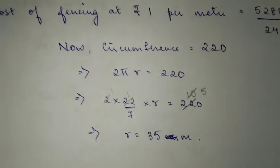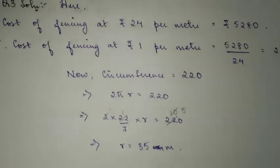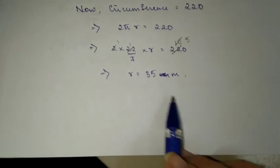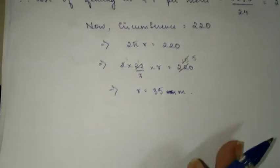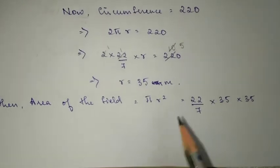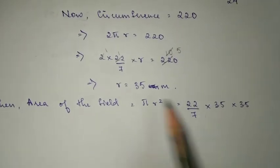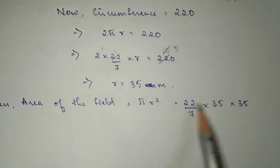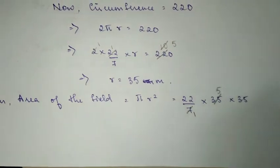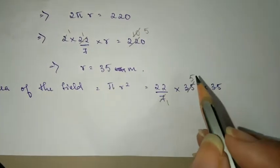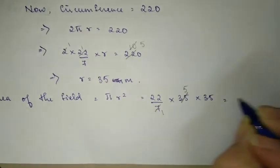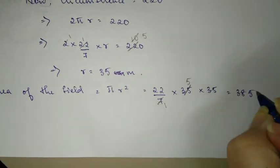Now using that radius we are going to find the area and how much it costs to plow that area. Let's find out area of the field using the formula πr square. If you substitute it, you can divide 7 and 35, so you get 22 into 5 into 35. If you multiply that you will get 3850 meter square area.